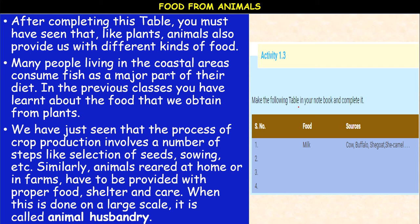Make the following table in your notebook and complete it. Type of food: milk — from cow, buffalo, she-goat, she-camel. The next is meat.